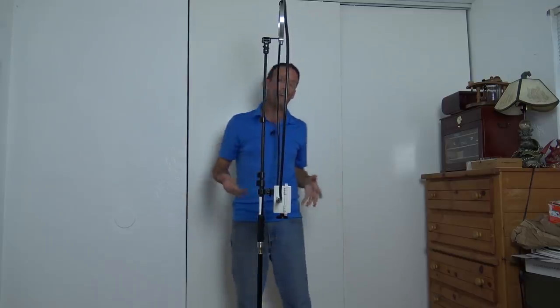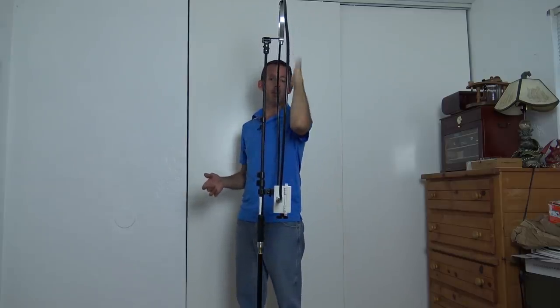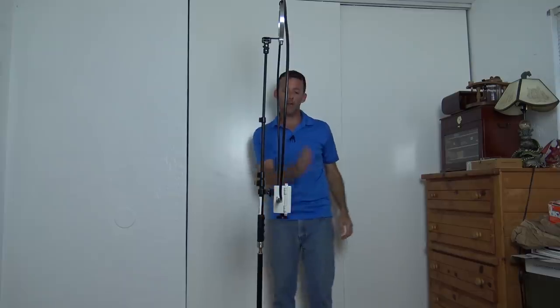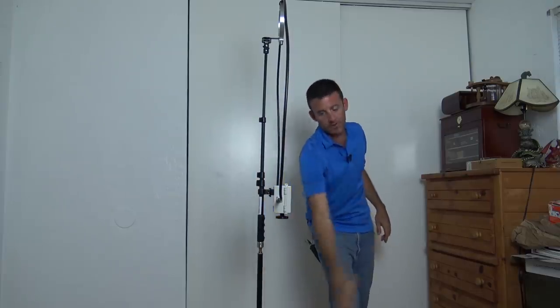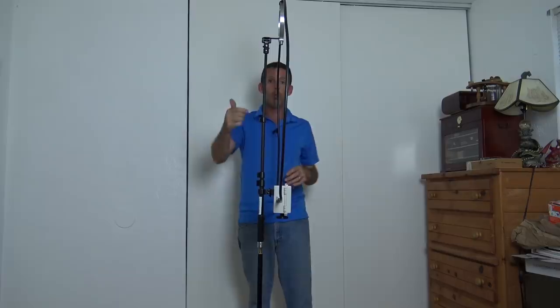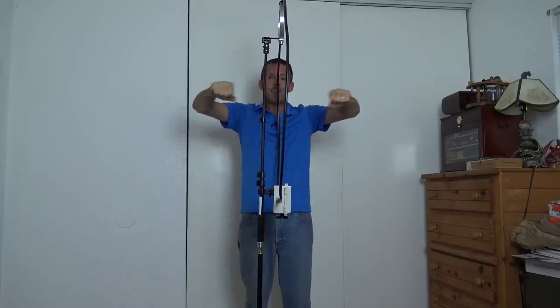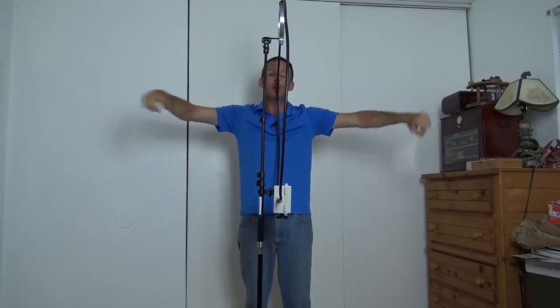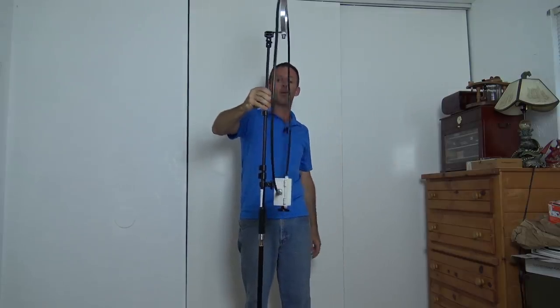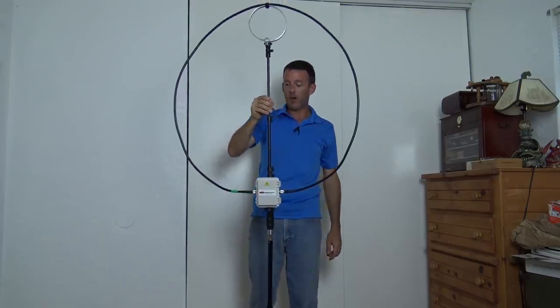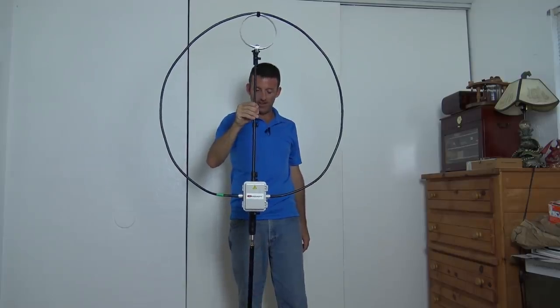And the way these loops radiate is this way. Imagine you take a bicycle rim and you roll it down the street, kind of like this. If this was an actual wheel, you roll this down the street. That's the way it's going to have a null, which is like 15 dB down from your receive.